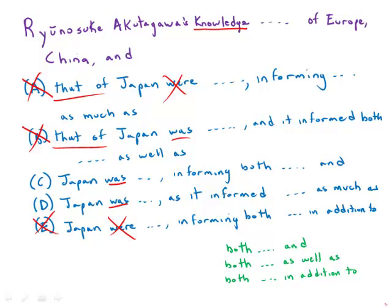I'll also talk about the use of the word 'both.' On the GMAT, the correct idiom is 'both...and' — both X and Y. That is the correct idiom. If I say 'both X as well as Y' or 'both X in addition to Y,' both of those are considered redundant and incorrect on the GMAT. So that is also a problem in a few of the answer choices. C has a correct 'both...and.'